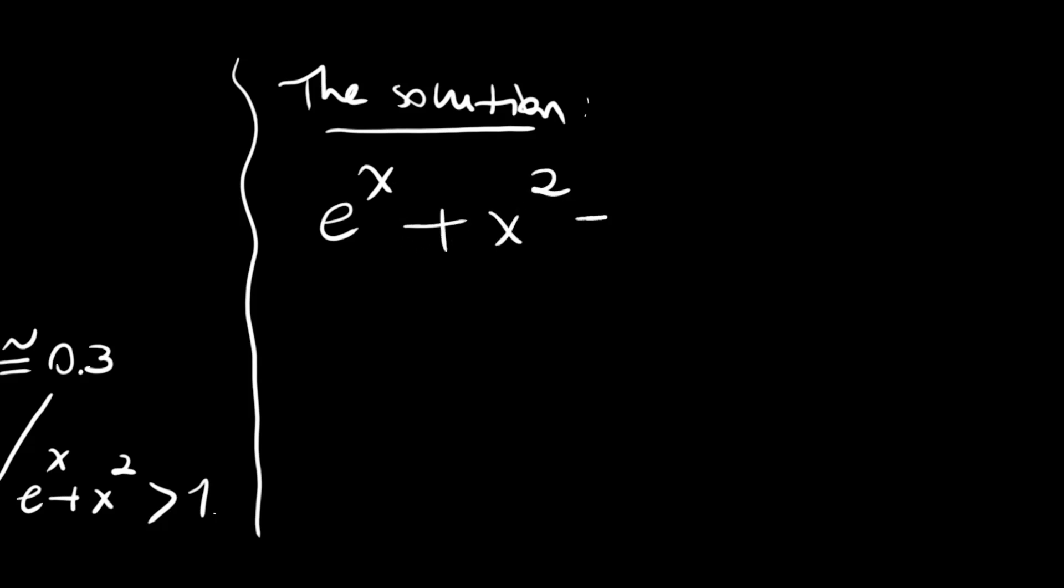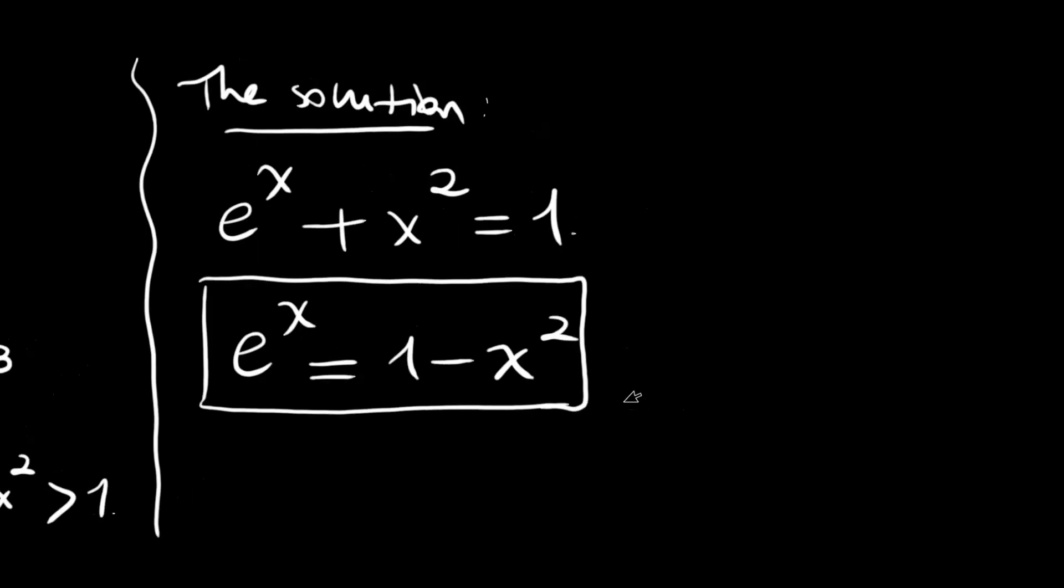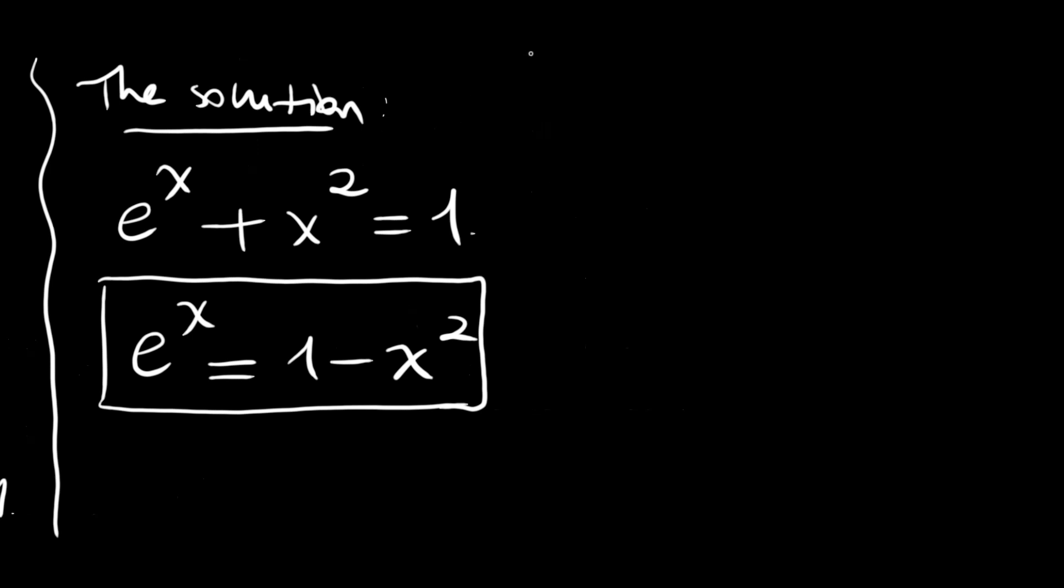Let's write this as e^x = 1 - x^2 and try to sketch the left hand side and right hand side. Now e^x is an increasing exponential function looking like this.